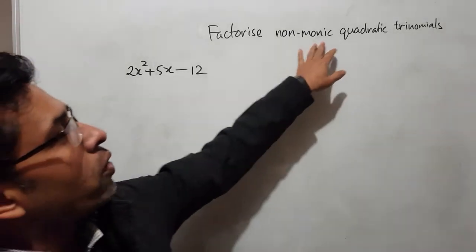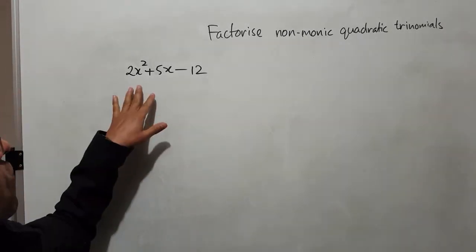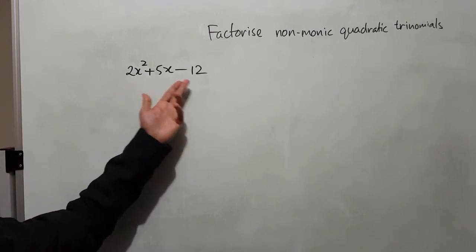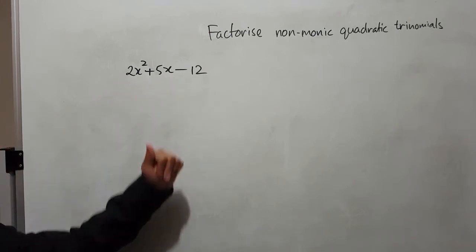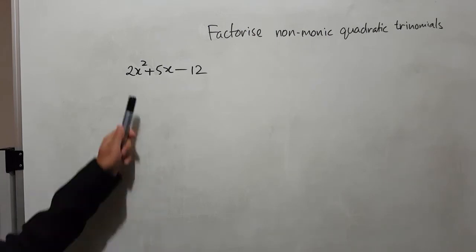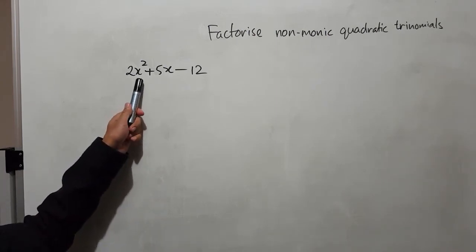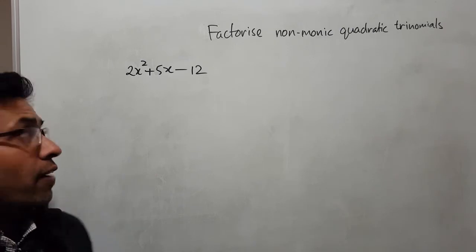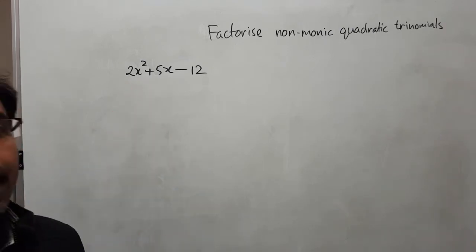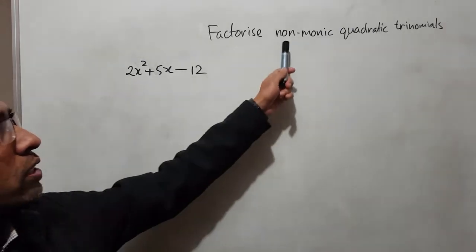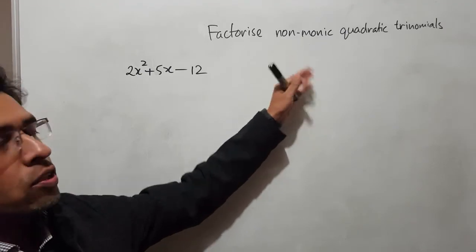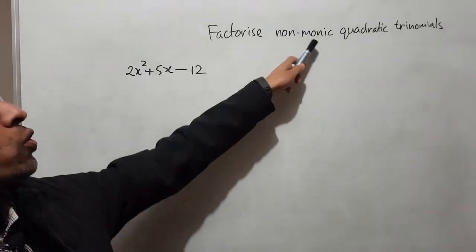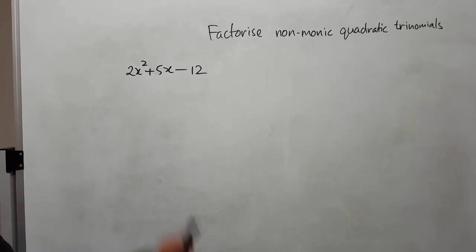The term non-monic comes from looking at quadratic trinomials. We have three different terms, and the coefficient of x squared is 2. If the coefficient of x squared is more than 1, then we are using non-monic. Non-monic means not monic — monic means 1. So if it is not 1, then we say it is non-monic.